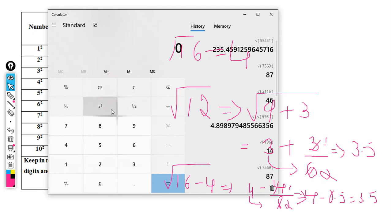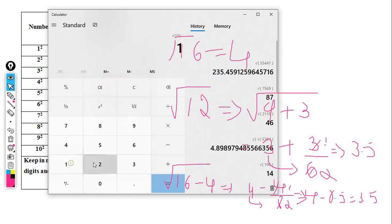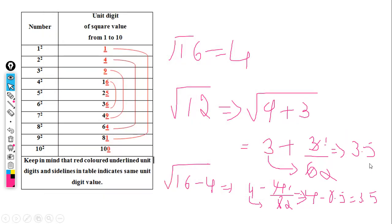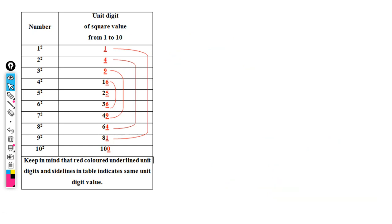Using a standard calculator for the square root of 3.5, it equals approximately 3.5. This is a non-perfect square, so let's use our method.